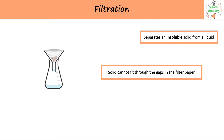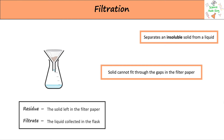The solid is collected in the paper as the residue, and the liquid is collected in a flask as the filtrate. For example, if you had a mixture of sand and water, the sand particles are much too big to fit through, so they are collected at the top, while the water passes through.